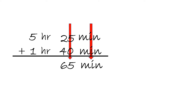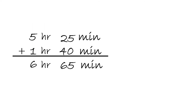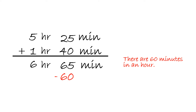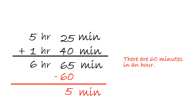Now, we know that's a problem because there are only 60 minutes in an hour. Bring down the hour: 5 plus 1 equals 6, giving us 6 hours and 65 minutes. What we do is subtract 60 minutes from 65, and the answer will be 5 minutes. Since we subtracted 60 minutes, we add the equivalent of 60 minutes, which is 1 hour. So it's 6 plus 1, which is 7. The answer is 7 hours and 5 minutes.